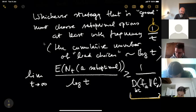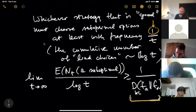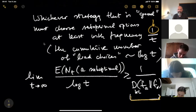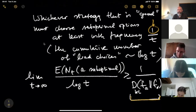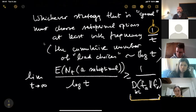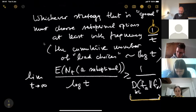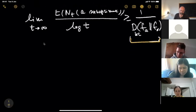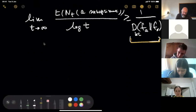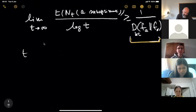This means there is an inherent statistical reason why you cannot explore too little. It's not just that algorithms aren't good enough — any algorithm that performs well must explore enough. This statement is made quantitative by the Lai-Robbins bound. One way of implementing exploration is through epsilon-greedy.